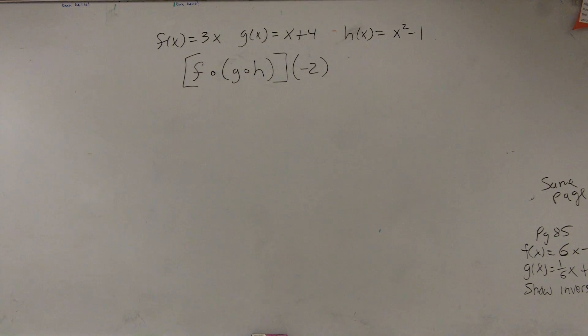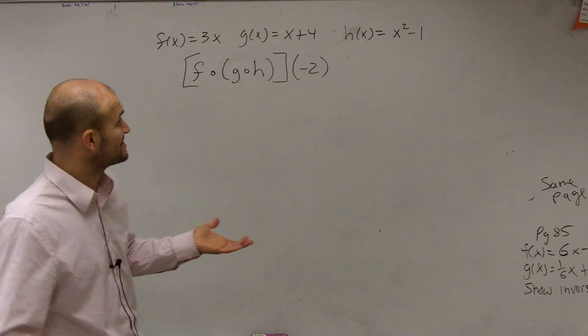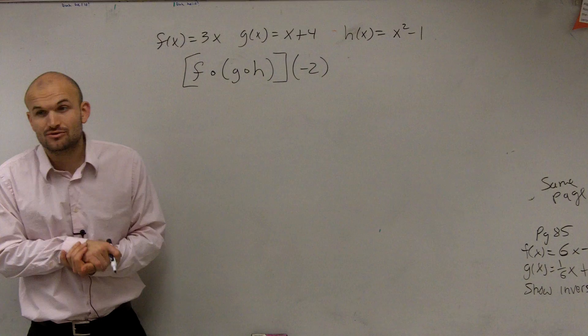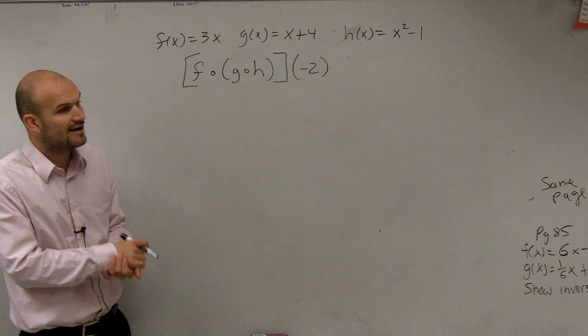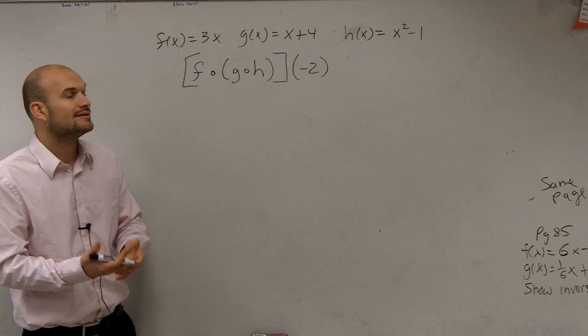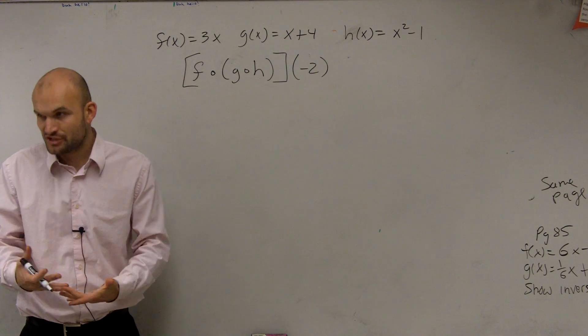Alright, so on this problem we're given f of x equals 3x, g of x equals x plus 4, and h of x equals x squared minus 1. Then we're given a composition of f of g of h, and then of negative 2.